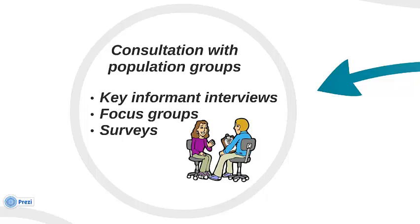Another rich source of information can be the population groups that you've identified through your scoping phase. Involving the population groups early in the completion of the Health Equity Impact Assessment can ensure that the mitigation strategies you've identified will be effective in addressing the health equity issues faced by those groups. You can conduct key informant interviews, focus groups and surveys with them. You can also connect with organizations and advocacy groups that directly work with those populations.